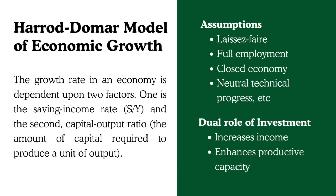According to this model, the growth rate in an economy depends on two factors. One is the savings-to-income rate — what portion of income we are able to save. The second is the capital-to-output ratio — how much capital we need to invest to produce a certain level of output. For example, in India the production cost of things is comparatively higher than in China, so with the same capital you can produce more in China than in India.